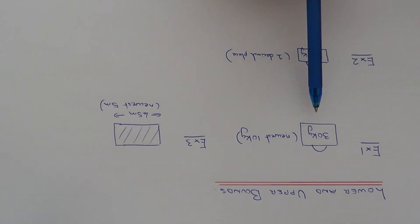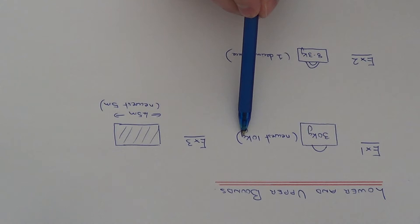So in example one, we've got a suitcase at the airport which has been measured to 30 kilograms and it's been rounded to the nearest 10 kilograms. This is because our scale at the airport was going up in 10s, so they've rounded it off to the nearest 10 kilograms.